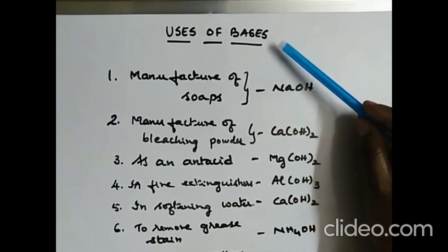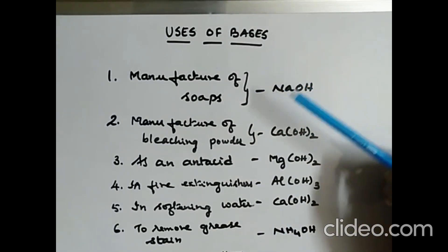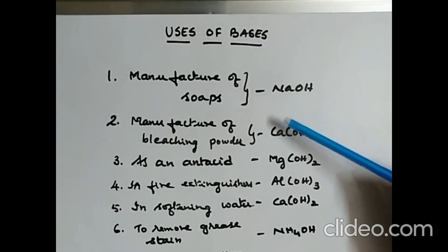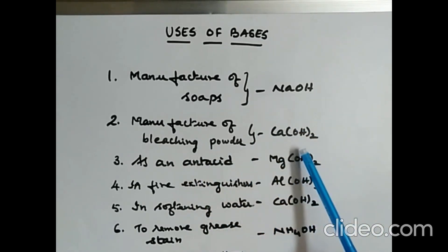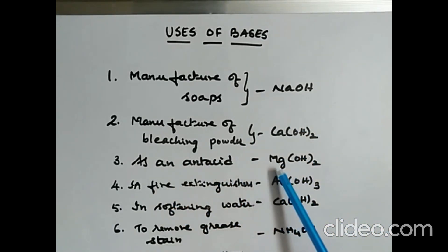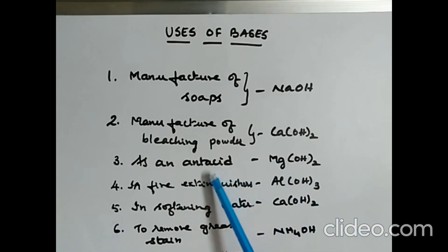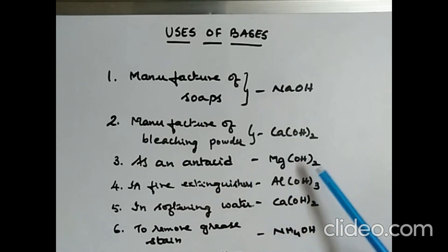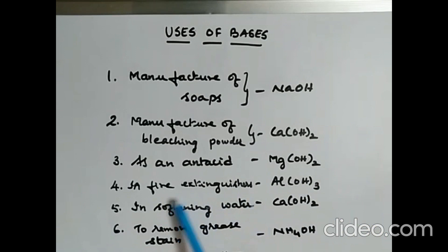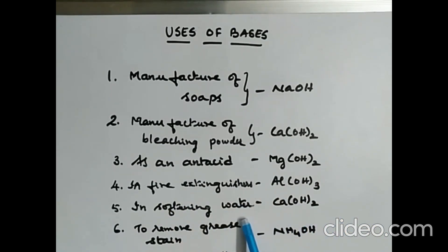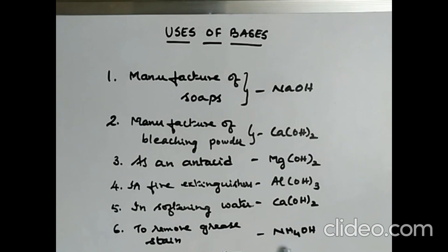The last part is uses of bases. Sodium hydroxide is used for the manufacture of soap. Calcium hydroxide is used for the manufacture of bleaching powder. Magnesium hydroxide is used as an antacid to neutralize stomach acidity; its commercial name is milk of magnesia. Aluminium hydroxide is used in fire extinguishers. Calcium hydroxide is used in softening of water. Ammonium hydroxide is used to remove grease stains from clothes.